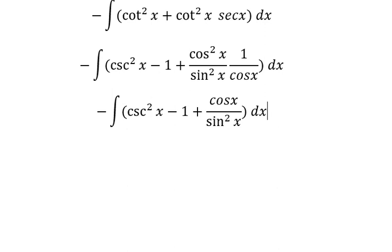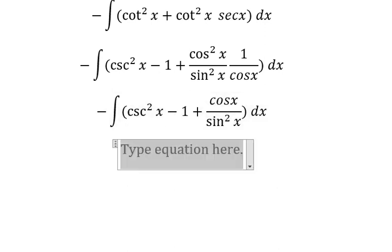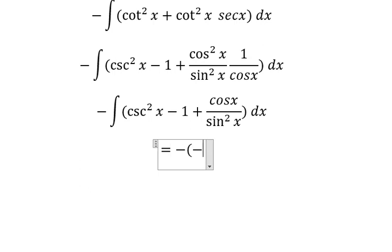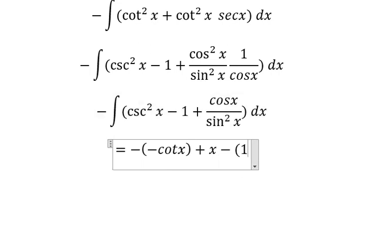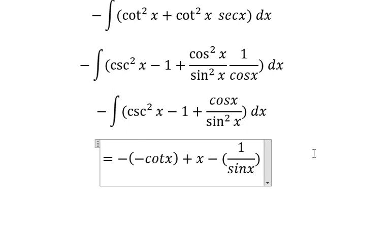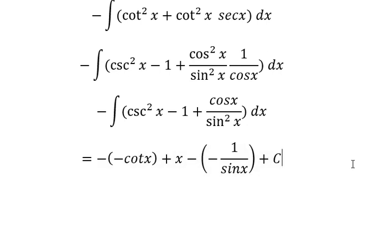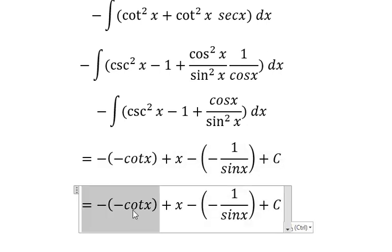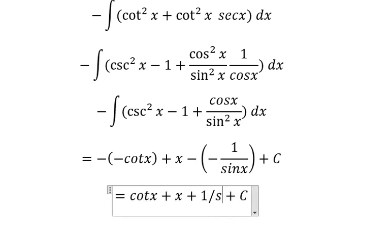Now we have the final answer. The integration of this expression gives negative cot x. The integration of 1 gives positive x. The integration of this term gives negative 1 over sin x, which is negative csc x. Adding the constant C, the final answer is: negative cot x plus x minus csc x plus C.